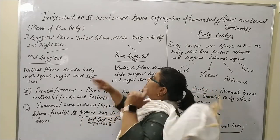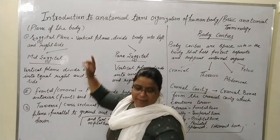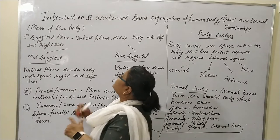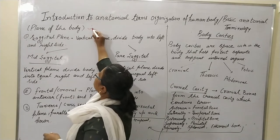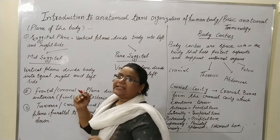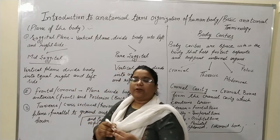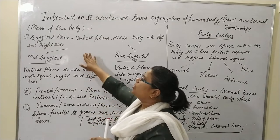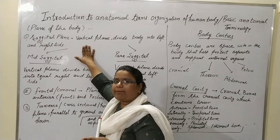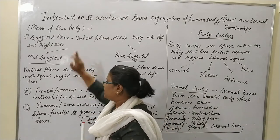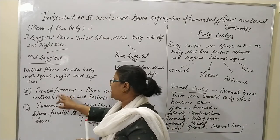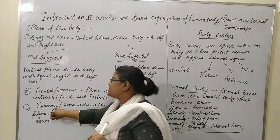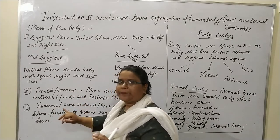First of all, we have divided the plane of the body. In the plane of the body, we have three planes: the sagittal plane, frontal plane or coronal plane, and the third is the transverse plane.